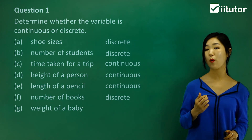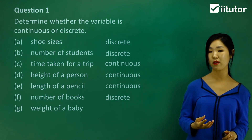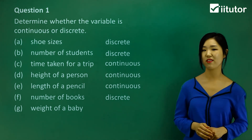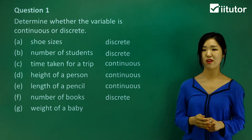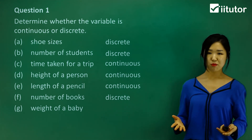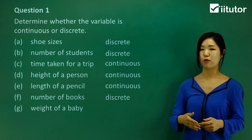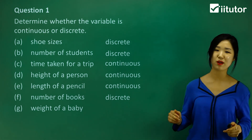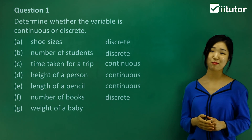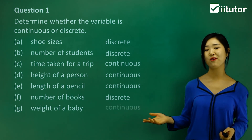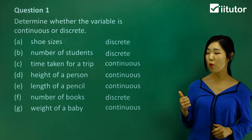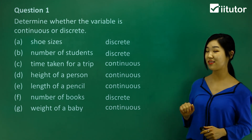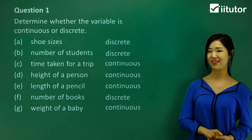The last one is the weight of a baby. A baby could be 3 kilograms, 3.5 kilograms, 4 kilograms, or even 3.51 or 3.5001 kilograms. There are so many possible numbers even between 3 and 4, so this one must be continuous. Weight, height, and length — these are all continuous data. Hopefully now you know the difference between discrete and continuous.